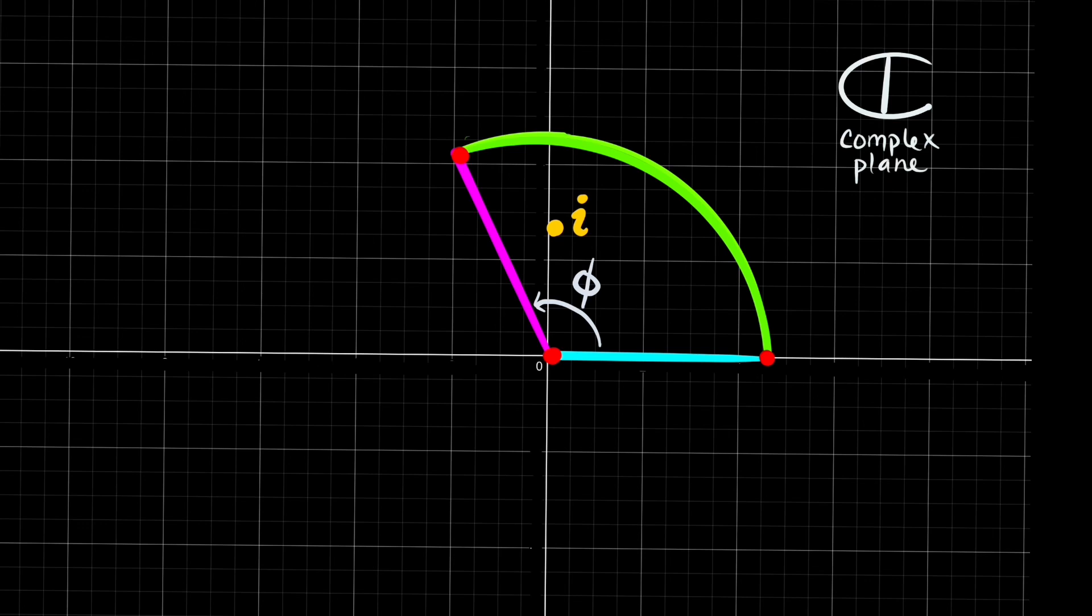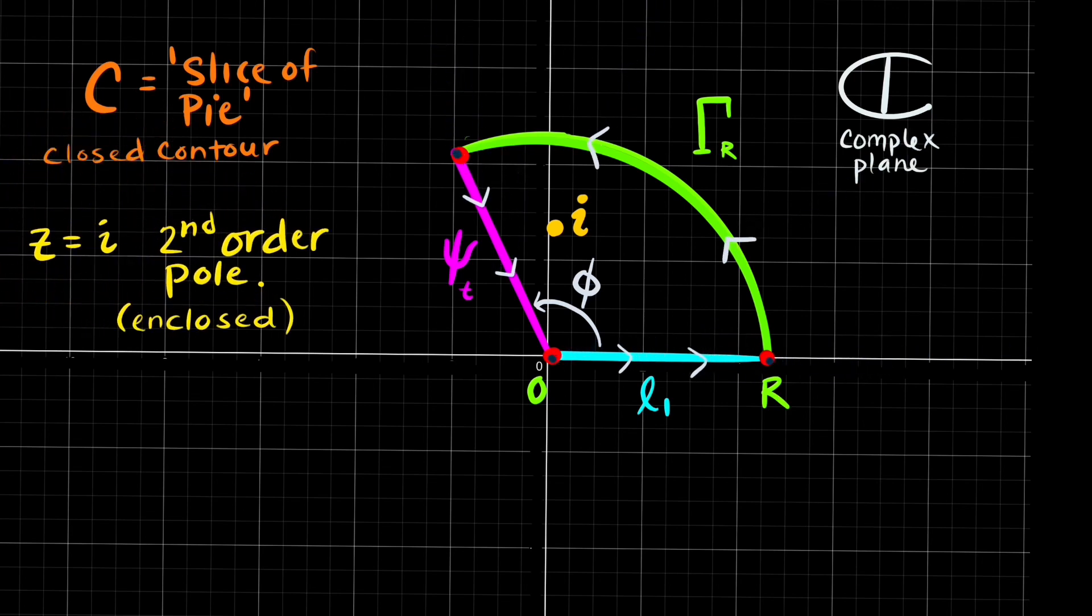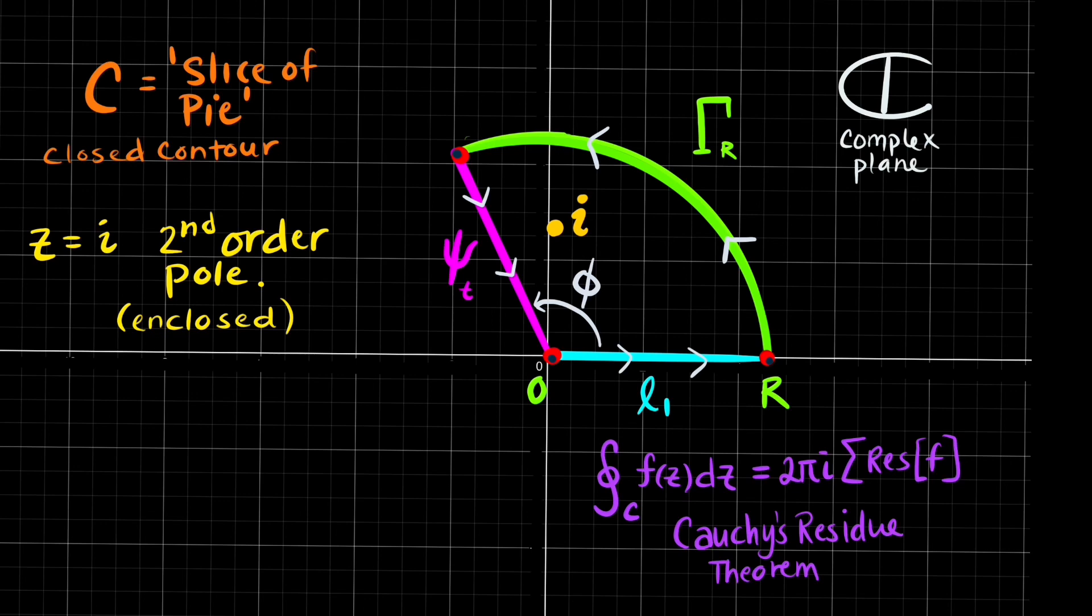You see, if we take one of these poles like i and enclose it with a contour, a closed contour here, we'll take a slice of pie as our contour. It is composed of three separate lines or curves: gamma r, psi of t, and L1, traversed in a counterclockwise manner. The pole i, which is a second order pole, is enclosed in this closed contour. And so we can apply Cauchy's residue theorem which says that the closed contour of this function, integrated, is going to equal 2 pi i times the sum of the residues of the poles inside. This will also be equal to what each of the contour integral or line integrals along each curve will evaluate to.